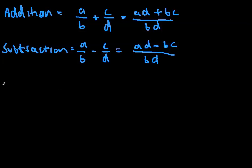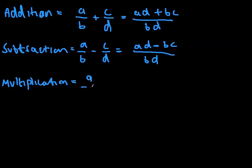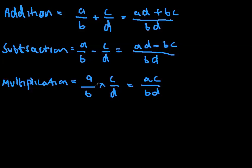And multiplication — very easy. Multiplication is simply A over B times by C over D. All you need to do is multiply AC on top and BD on the bottom. That's just simply A times C and B times D.